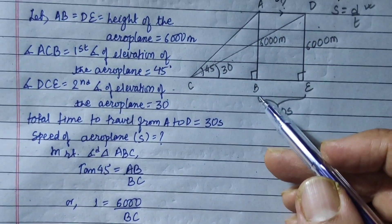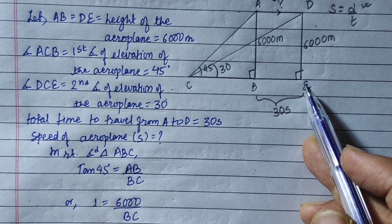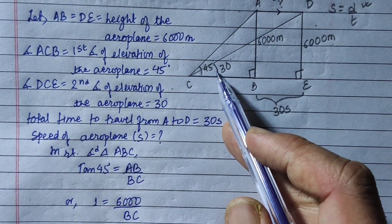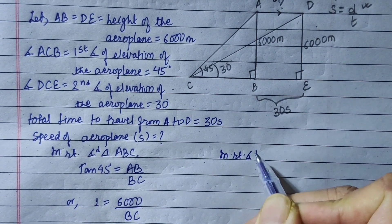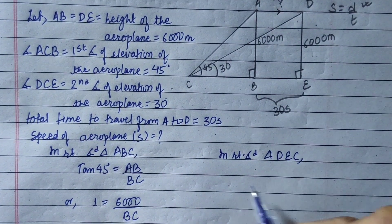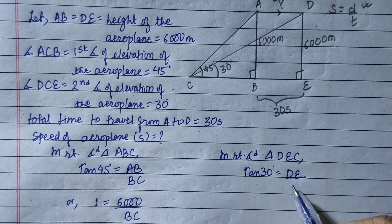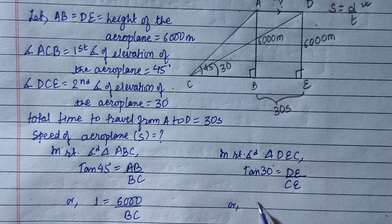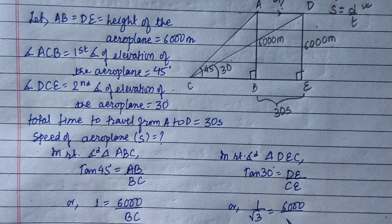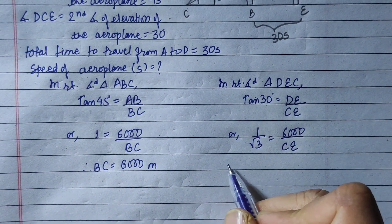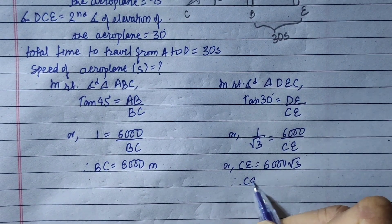Now we have to use DE and CE in right-angled triangle DCE. tan 30° equals DE over CE, which equals 1 over root 3. DE is 6,000, CE is unknown. Therefore CE equals 6,000 multiplied by root 3.